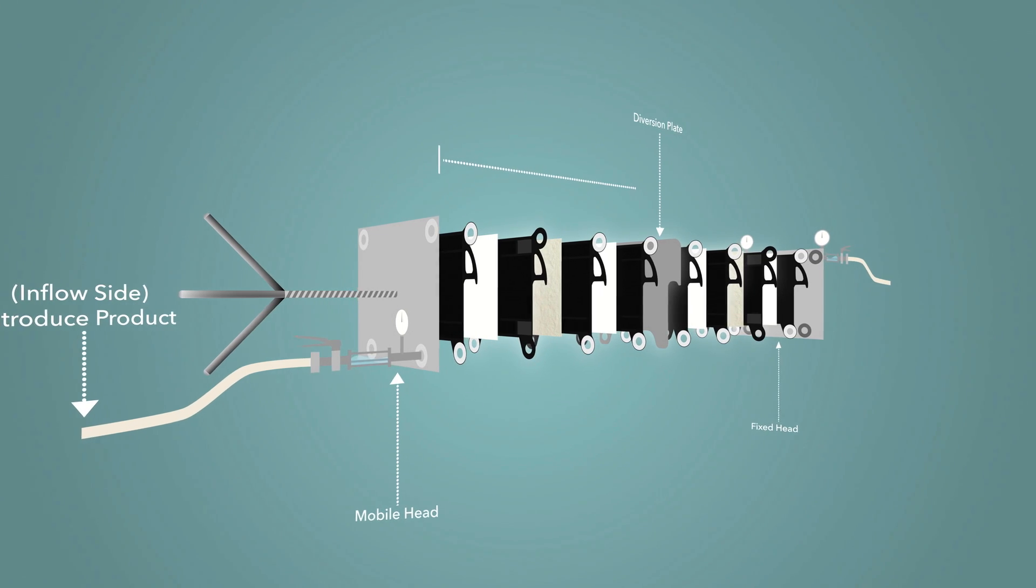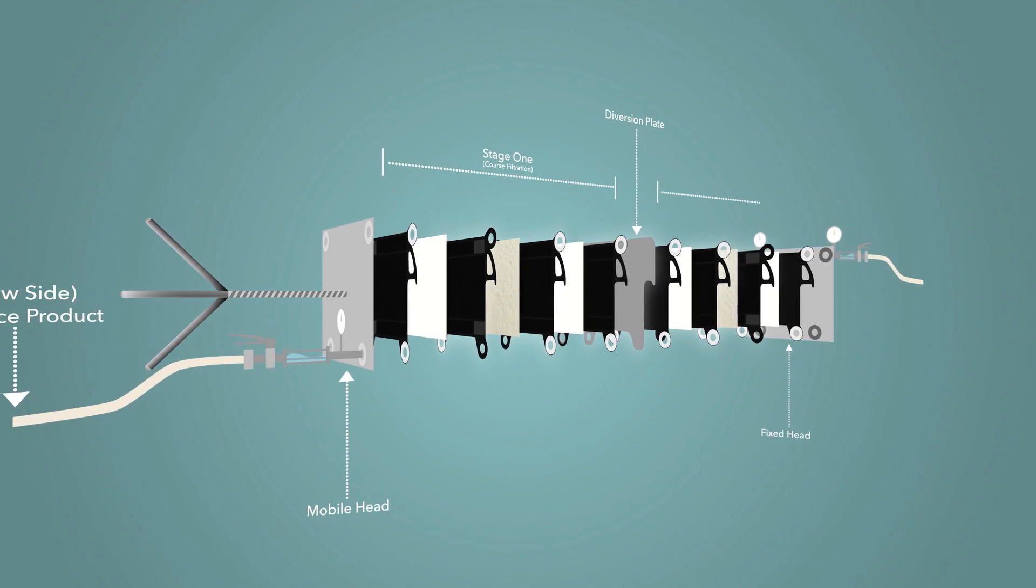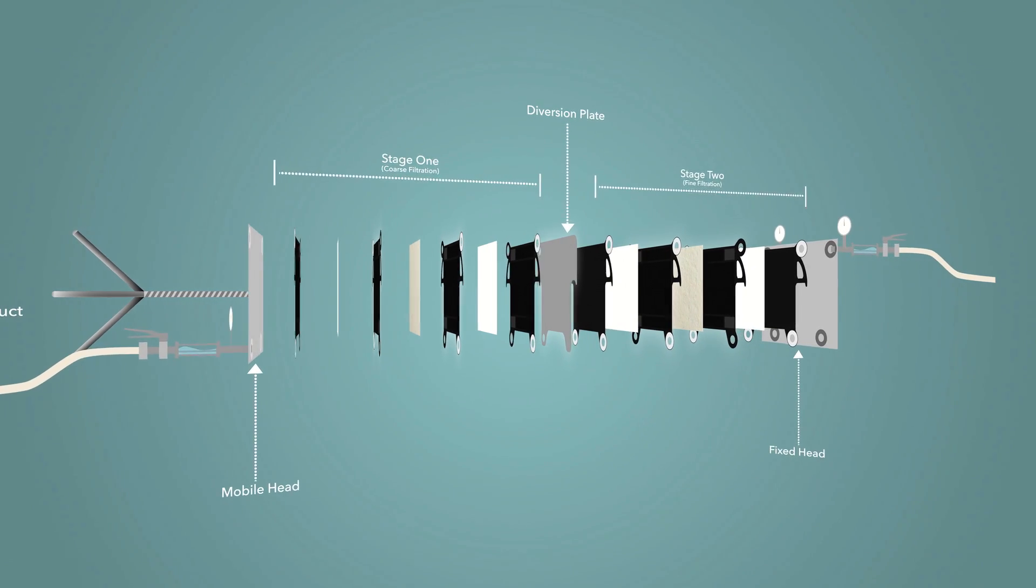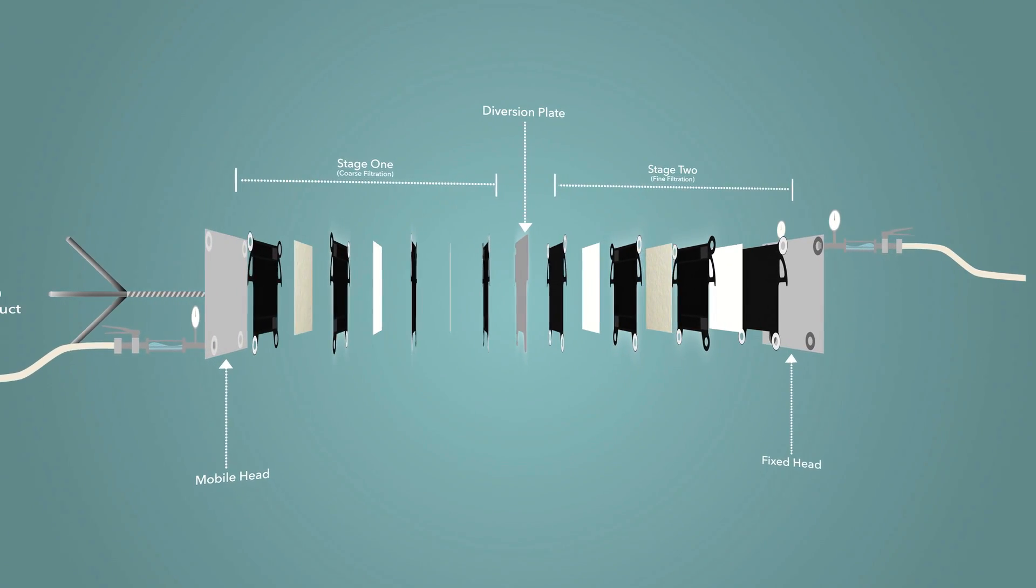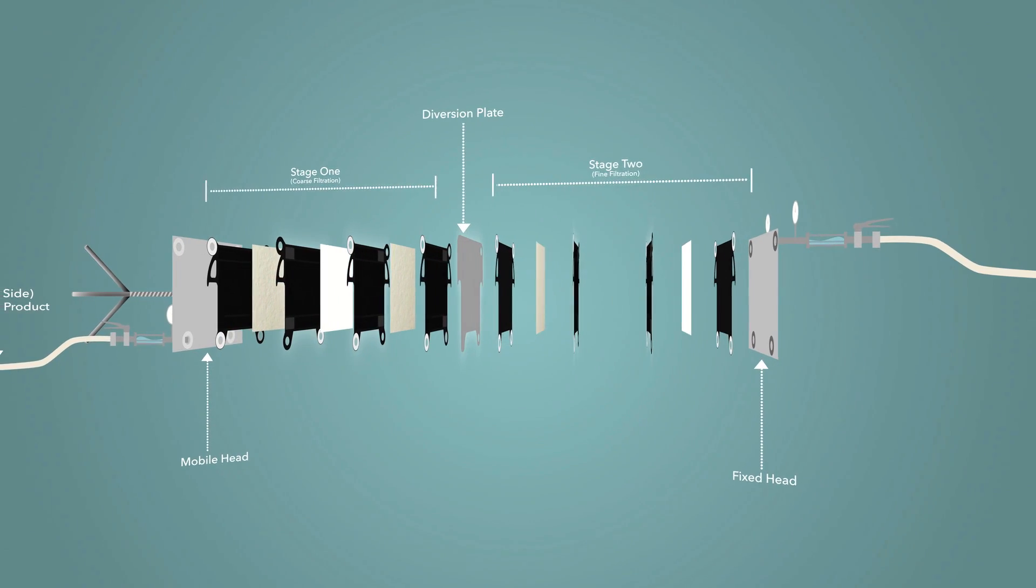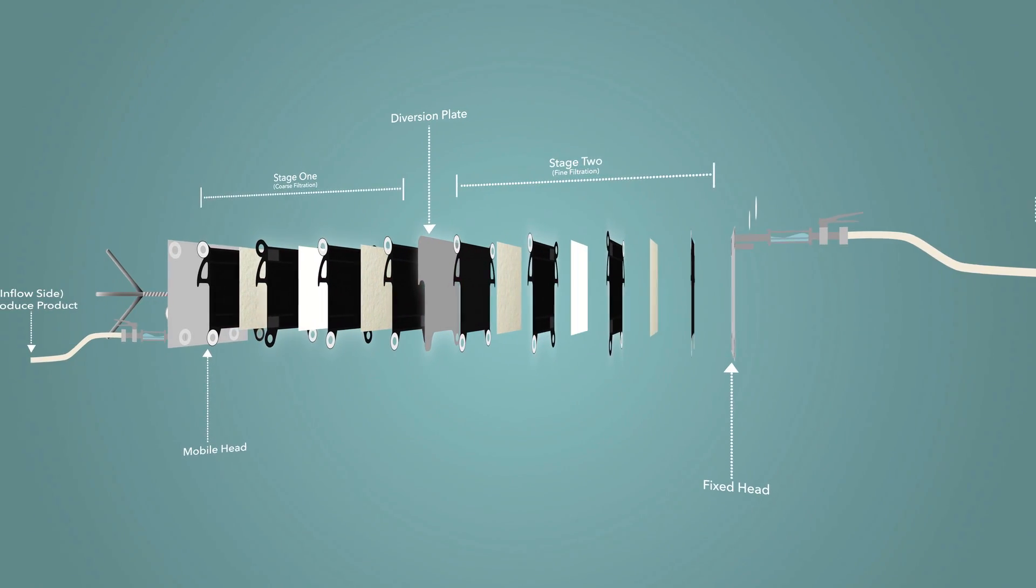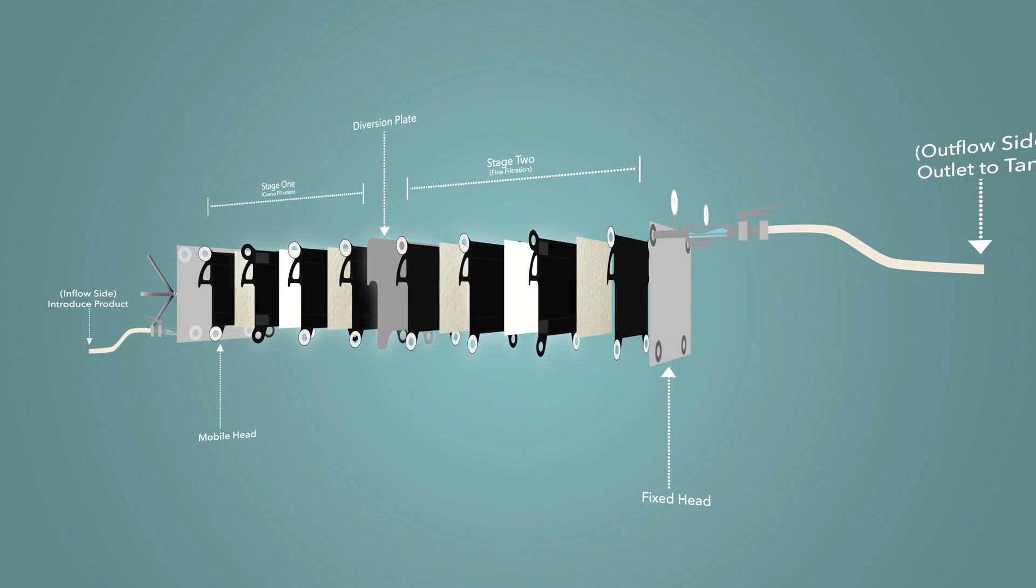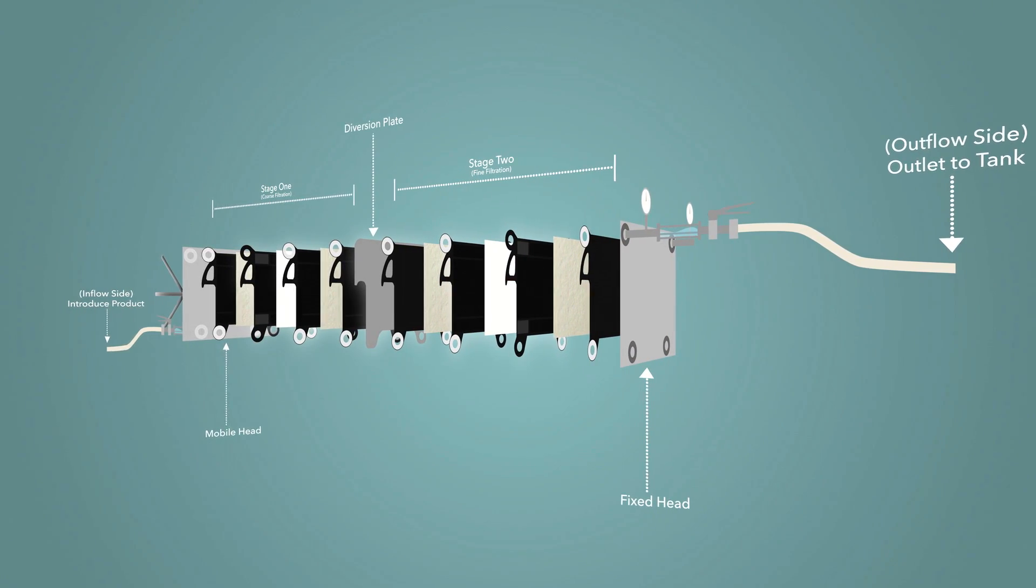Stage 1 will be the first coarse filtration and stage 2 will be the finer filtration. This is done by isolating the inflow of your product in the rear portion of the machine. Product must then pass through your stage 1 filters in order to flow to the front portion. Finally, in order to flow out of the machine, it must pass through the second stage filters.